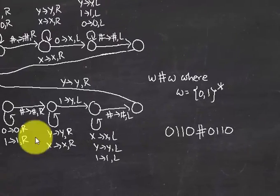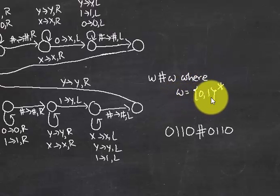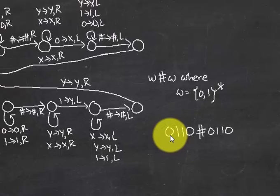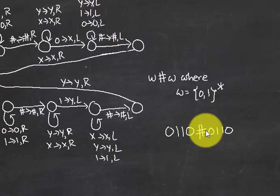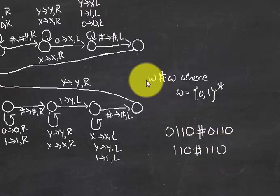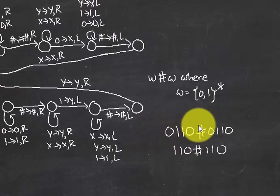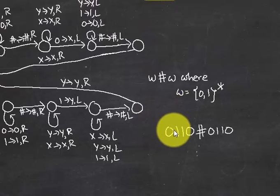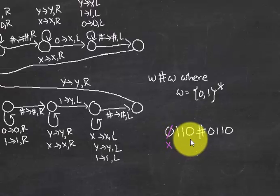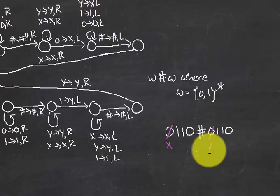The second example is w#w where w ∈ {0,1}*, meaning w contains the alphabet 0 and 1. The string has to be a mirror image on each side of the hash. For example, it could be 1 1 0 # 1 1 0. Whenever we see a zero we convert it to X and move right, ignoring ones and zeros until we reach the hash, then go right and when we see a zero convert it to X.